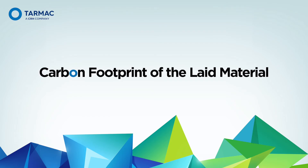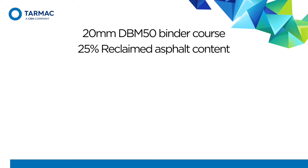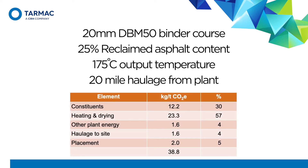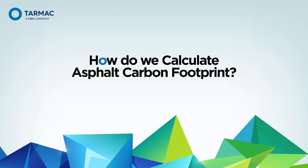So back to the elements in the process of laying asphalt and their carbon footprint. Taking DBM50 binder course as an example, with 25% reclaimed asphalt content, an output temperature of 175 degrees centigrade, and a 20-mile haul to site, these are the typical CO2 figures we get. Well over half the energy derives from heating and drying. This is why the industry, as well as consistently pushing up reclaimed asphalt use, has also focused on reducing production temperatures as we try to improve asphalt's sustainability. It's interesting to note that the carbon footprint after the plant gate comes to less than 10% of the total, so the carbon footprint sits pretty squarely with the constituents but mostly with the heating and drying energy.